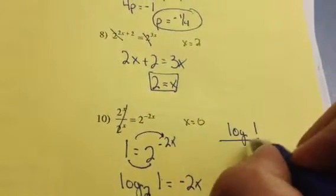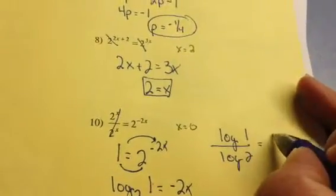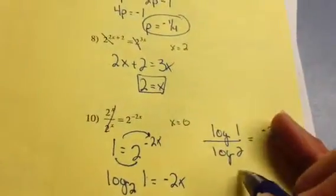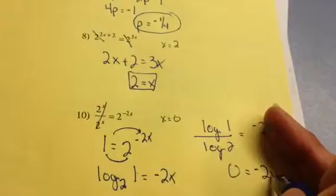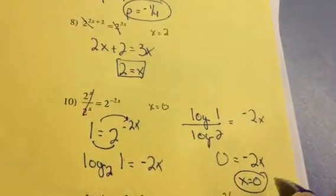The rest of us will have to do the change of base formula. So when you type that in, you're going to get 0. And now to solve for x, just divide by negative 2, and that's how I get the answer of 0.